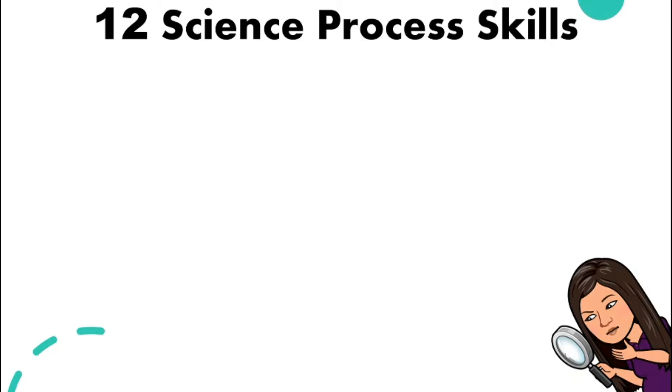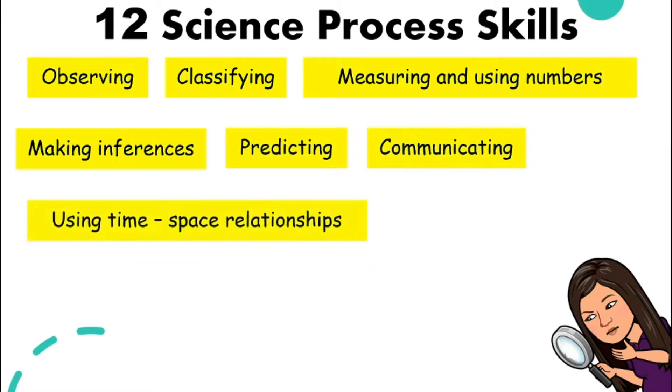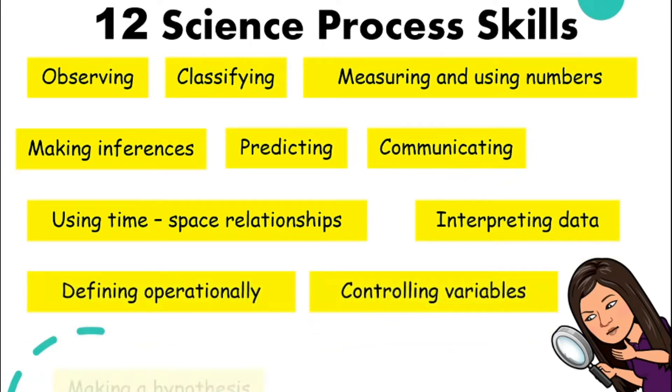In primary school, you actually have already learned about science process skills. There are 12 of them: observing, classifying, measuring and using numbers, making inferences, predicting, communicating, using time-space relationships, interpreting data, defining operationally, controlling variables, making a hypothesis, and experimenting. Here are the 12 process skills that you will get to practice throughout the whole year when you study science.